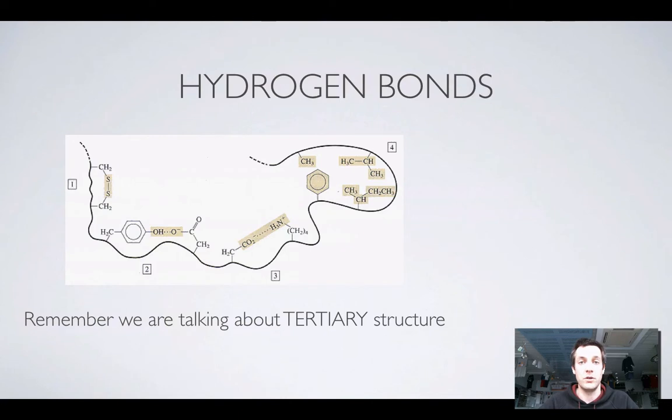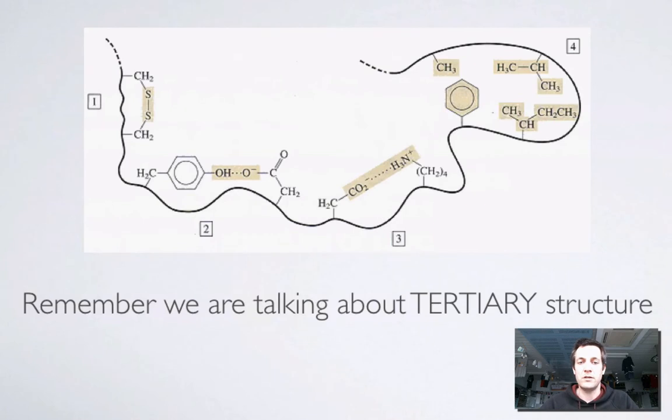Now it might be hydrogen bonding, but if the hydrogen bonding is between amide groups, remember that is secondary structure. So if we're talking about tertiary structure, we're looking for side chains that can form hydrogen bonds with one another.